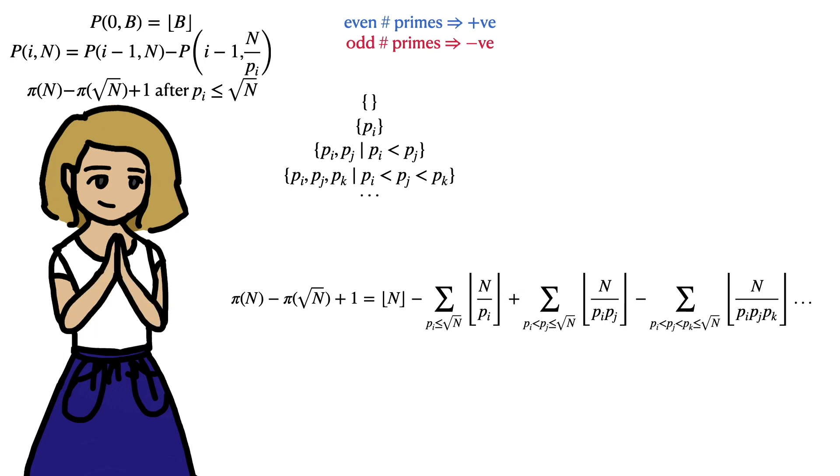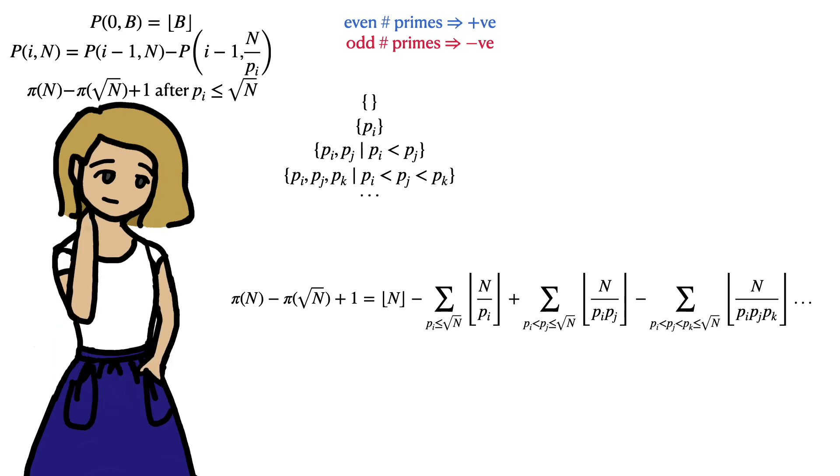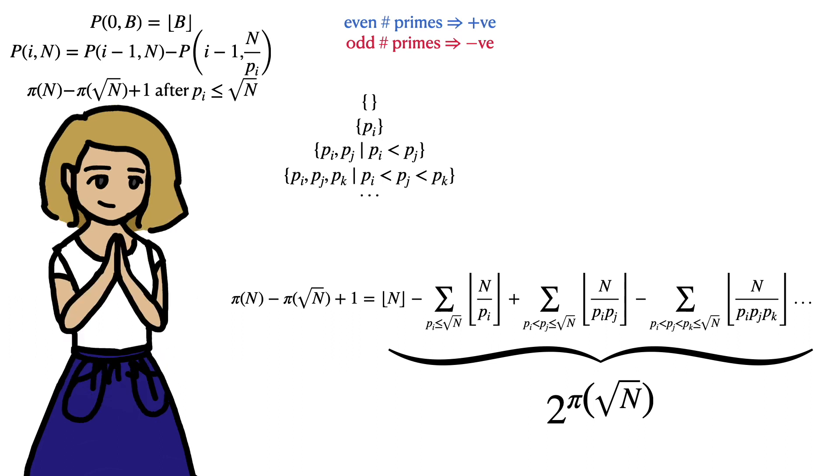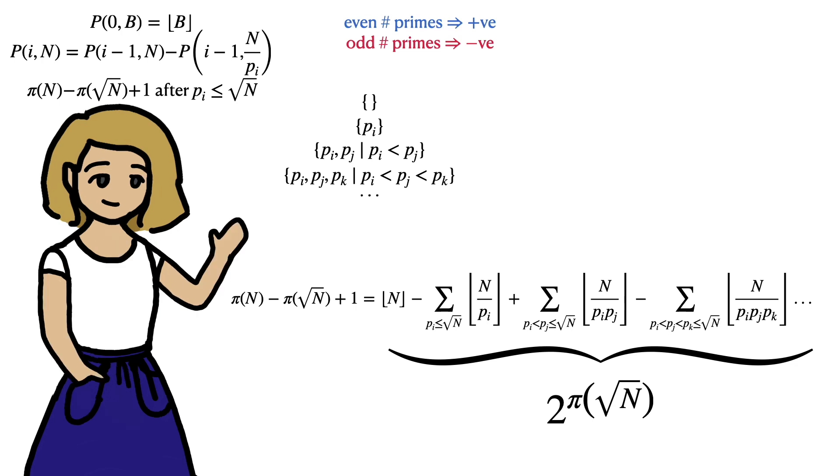So yeah, that's a derivation of Legendre's formula. I hope you guys enjoyed it. I should point out that this formula isn't, to my knowledge, a very practical way of computing π(n), since the number of terms grows exponentially, being equal to 2 to the power of π(√n). But besides its apparent uselessness, I think the formula and the ideas behind it are quite pretty, and hopefully you guys do too. And I'll see you next time.